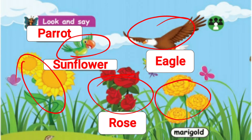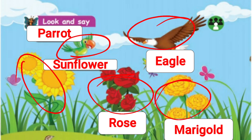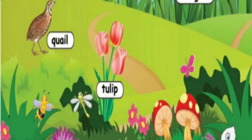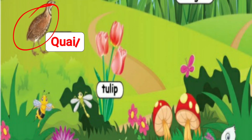And what is this? This is a marigold. M-A-R-I-G-O-L-D. Marigold. And what is this? This is a quail. Q-U-A-I-L.